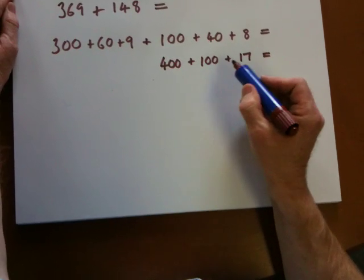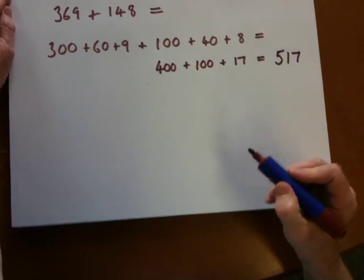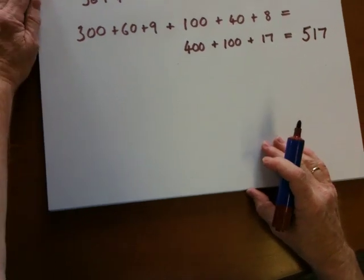400 add 100, 500 and 17. So that's one style of partitioning.